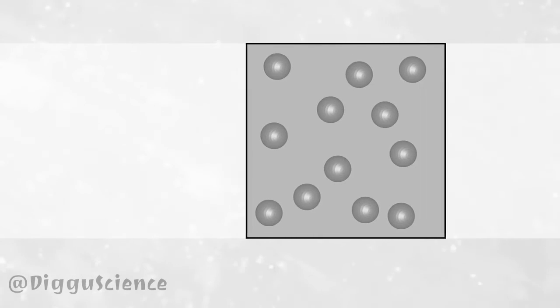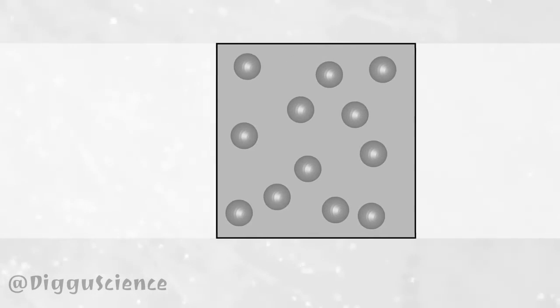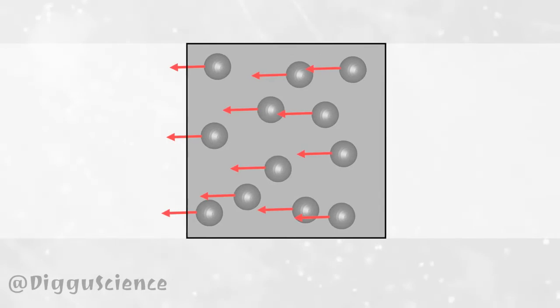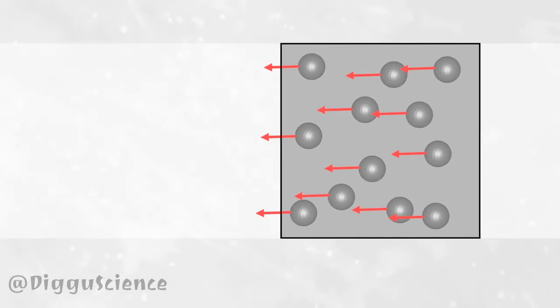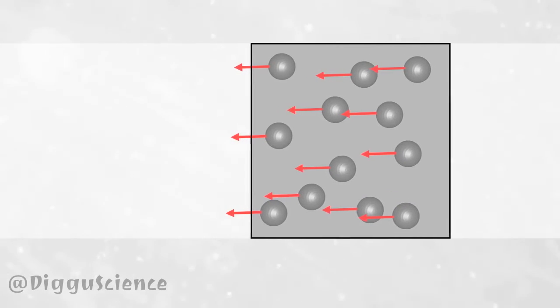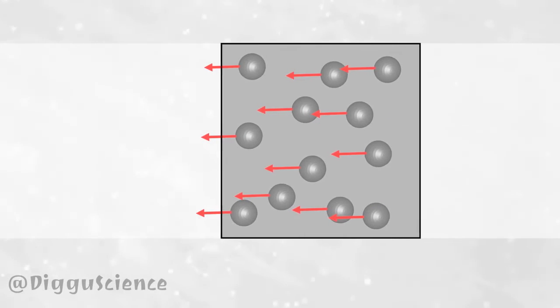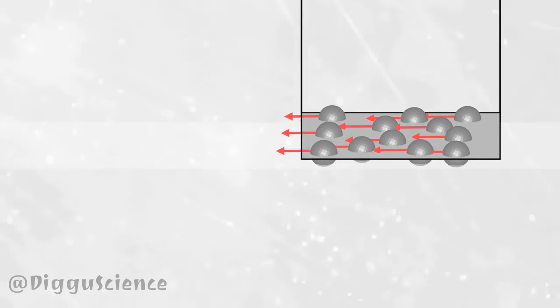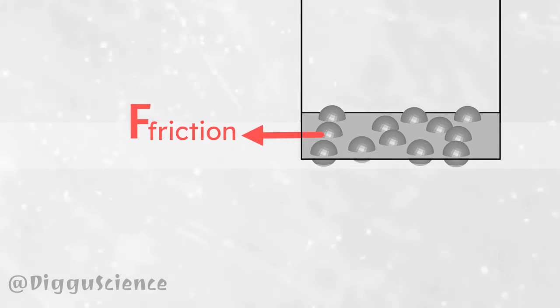When this fluid parcel moves, this surface will rub against another surface. The friction force will have a direction opposite to the bottom of the fluid parcel shift. Because this friction force only works on the friction surface, the friction force is included in the surface force group.